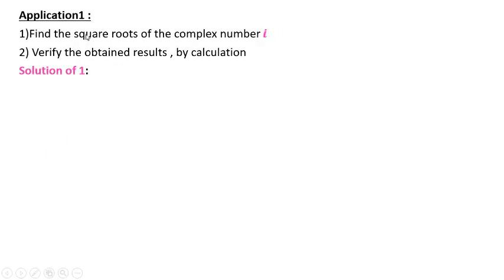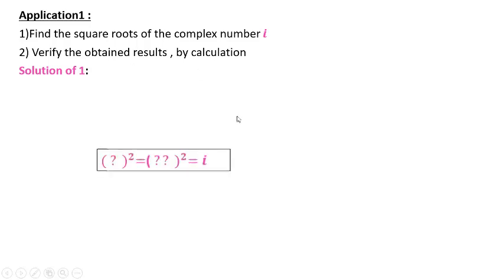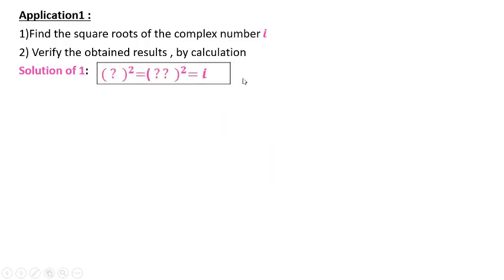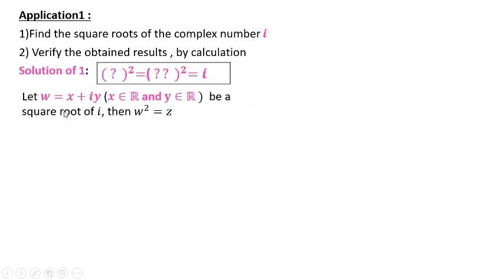Application number one: find the square roots of the complex number i. Part two: verify the obtained results by calculation. The question here is: what are the numbers whose squares will be i? Applying the technique, let w = x + iy, where x and y are two real numbers, be a square root of i.